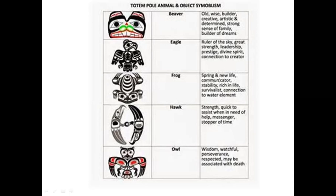The hawk — strength, quick to assist when in need of help, a messenger, stopper of time. And these stories and myths behind these would have been taught to the children — they would be really deeply aware of what was being shared with them. They grew up with it, so these forces were strong within them. The owl — wisdom, watchful, perseverance, respected, and may be associated with death. It's all about balance, of course, in life.